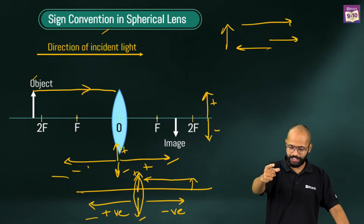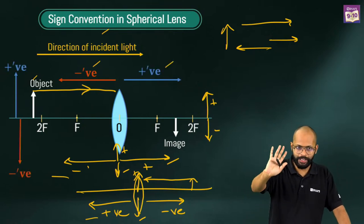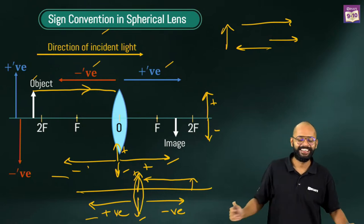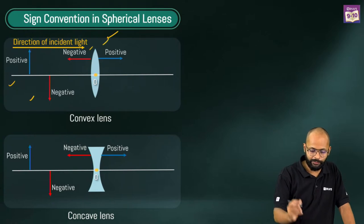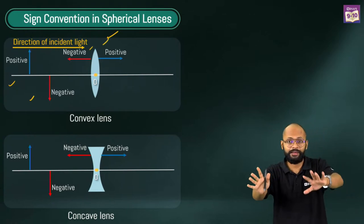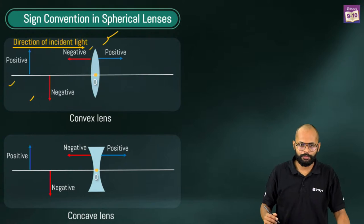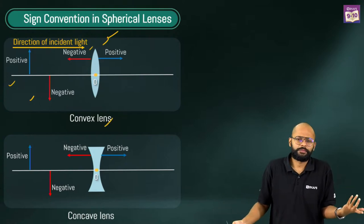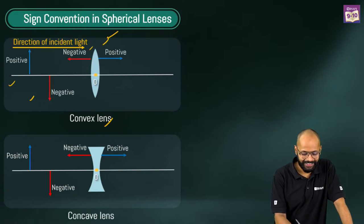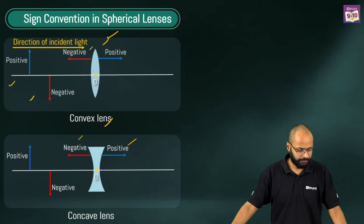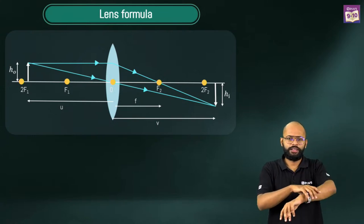All right, so left is negative and right is positive, up is positive and down is negative. Sign convention for spherical lenses is the same as in mirrors. Same with convex lens — up is positive, down is negative, right is positive, left is negative. This is something which we know. Now coming to lens formula.